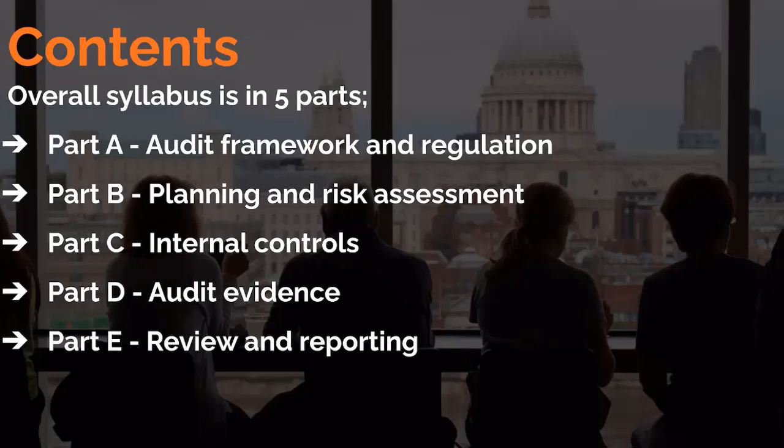In Part B we will look at what risk assessment is, how to plan an audit and its documentation, and we'll get an introduction to audit evidence. Part C — internal controls — is where we will equip ourselves with knowledge about controls: what controls the company has applied, whether they are automated or non-automated controls, and how to test them. All that knowledge will be acquired in Part C.